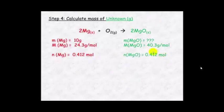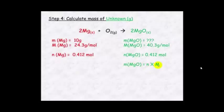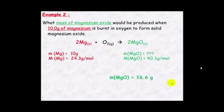We then use this mole value to determine the mass of magnesium oxide. Mass = number of moles × molar mass — plug in the values and we get a mass of 16.6 grams. Go back to the original question and double-check that you've calculated the right thing — mass to mass, we have it, so it's correct.